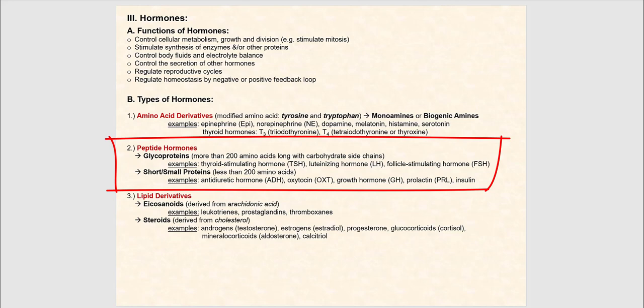The second type of hormones are what we refer to as peptide hormones. Examples are your glycoproteins, which consist of more than 200 amino acids linked together via peptide bonds. They're referred to as glycoproteins because they have an associated carbohydrate side chain. Examples are thyroid-stimulating hormone (TSH), luteinizing hormone (LH), and follicle-stimulating hormone (FSH).